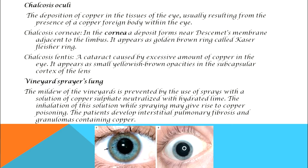First is chalcosis oculi — the deposition of copper in the eyes in areas like the cornea, lens, vitreous humor, and retina. This condition is called chalcosis oculi. The term 'chalcos' is a Greek word meaning copper; 'oculi' means eye.